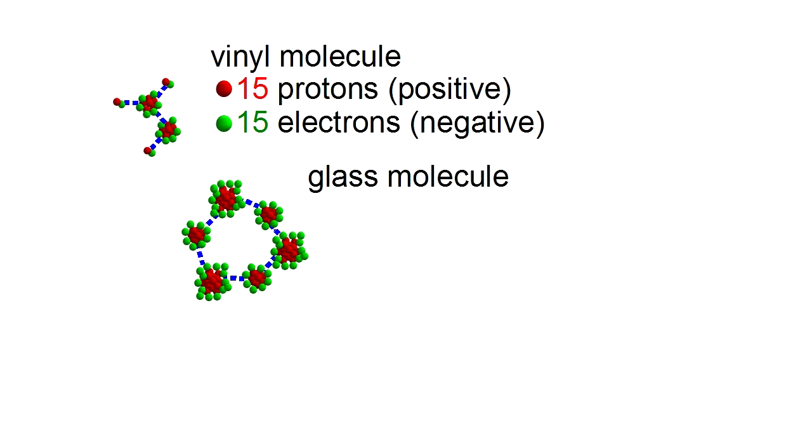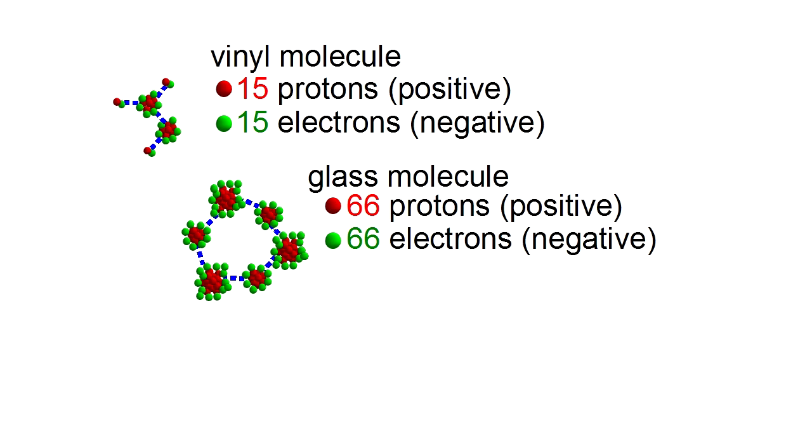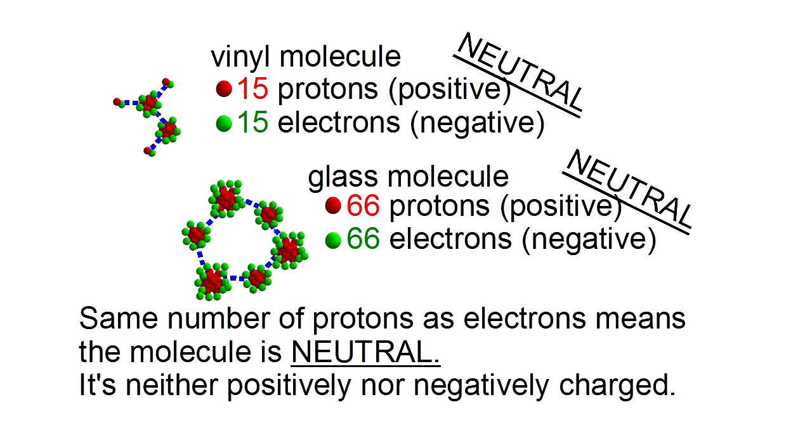If we add up all the parts of the atoms, vinyl is made up of 15 positive protons and 15 negative electrons. Glass is made up of 66 positive protons and 66 negative electrons. If there are the same number of protons and electrons in a molecule, then the molecule is neutral. It's neither positively charged nor negatively charged.